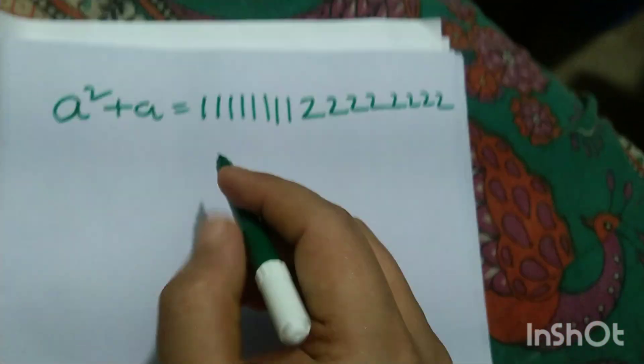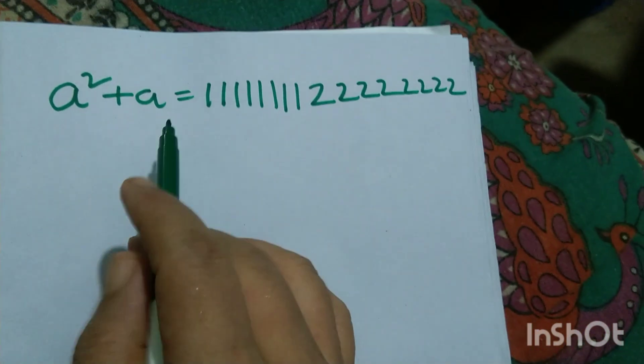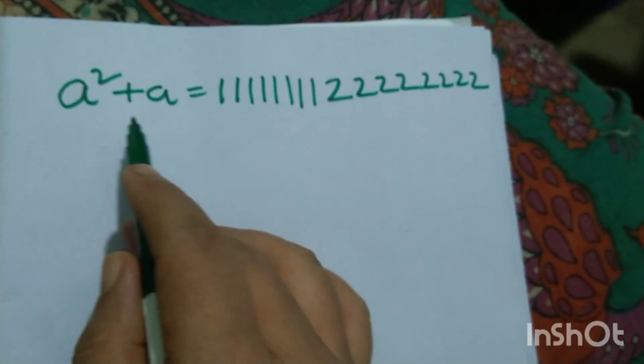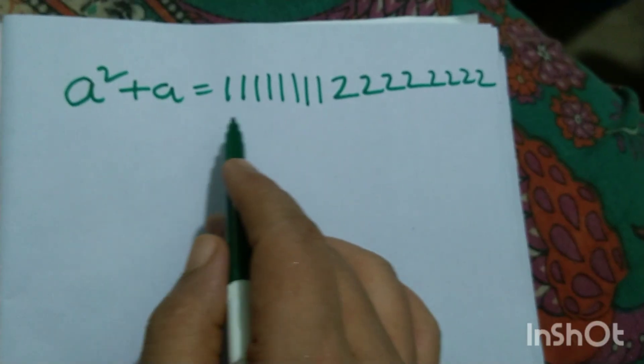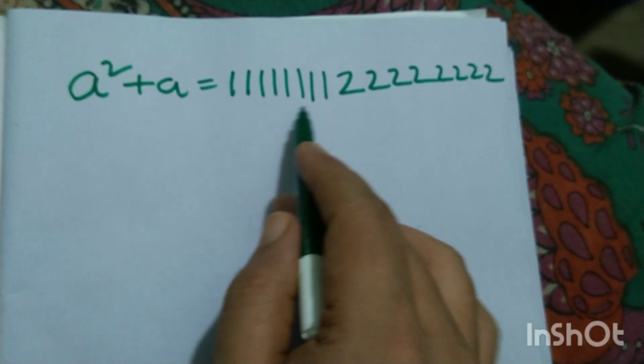Hello dear friends, welcome to my channel. Today's discussion is an olympiad problem: a squared plus a is equal to 81.